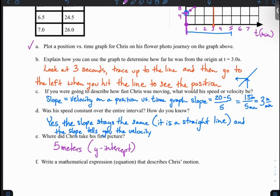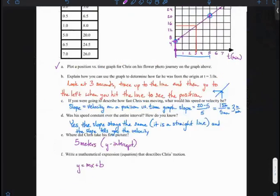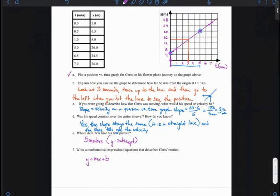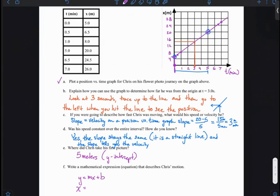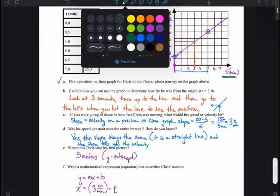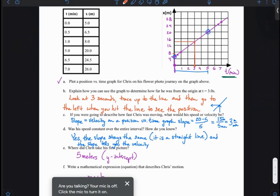And then it says to write a mathematical expression or equation that describes Chris's motion. So I'm going to use y equals mx plus b. And instead of y, I need to use my y variable, which in this case is x. And that'll be equal to my slope, which we figured out in part c is 3 meters per minute. Times, instead of x, I need to use my x variable. So here, my x variable is time. So I'm going to go times t. And then I'm going to add to that my y-intercept. My y-intercept is right here of 5. That was 5 meters.